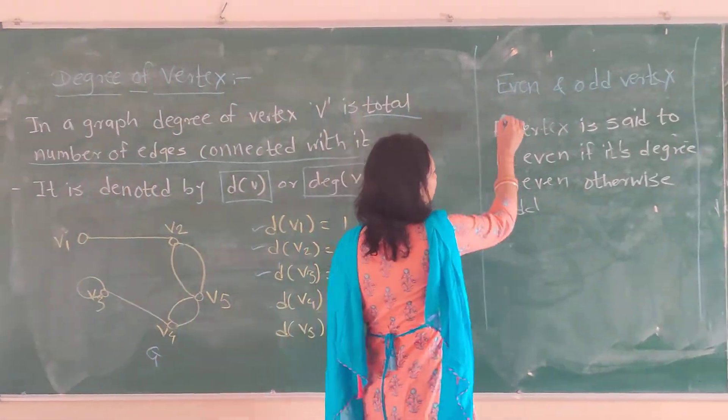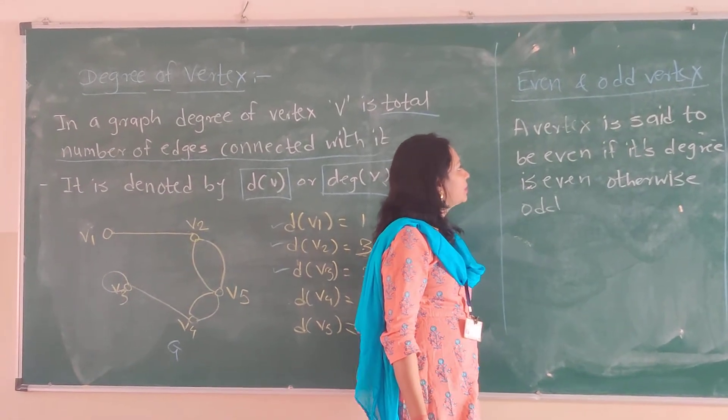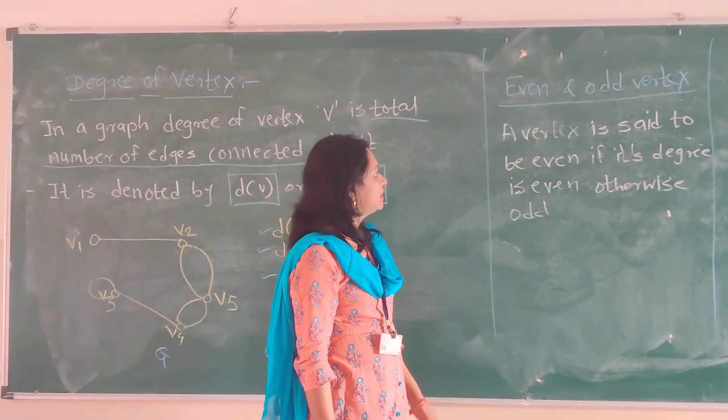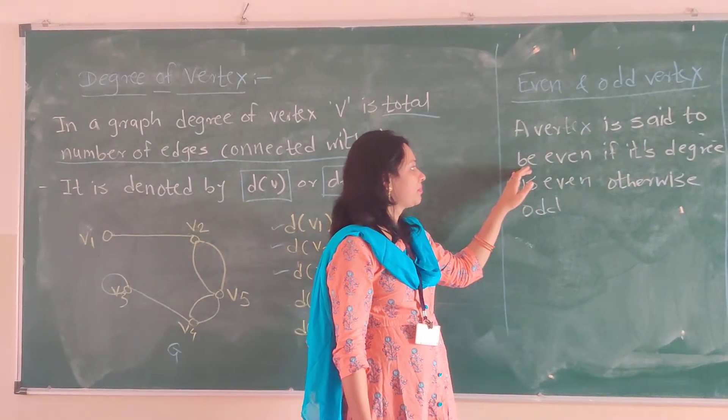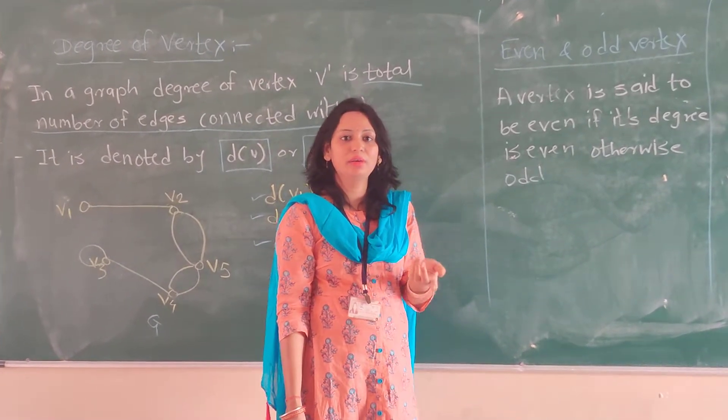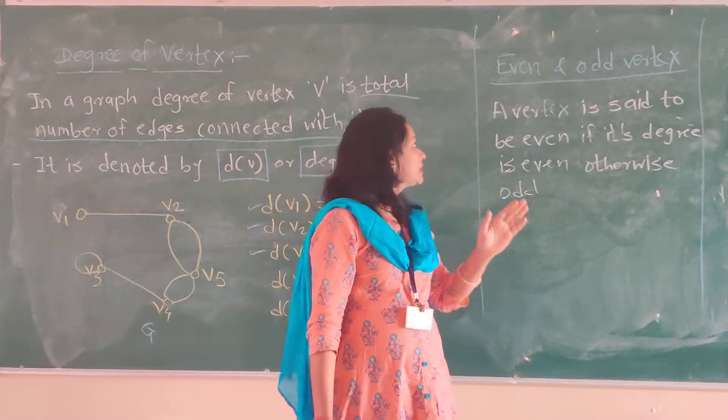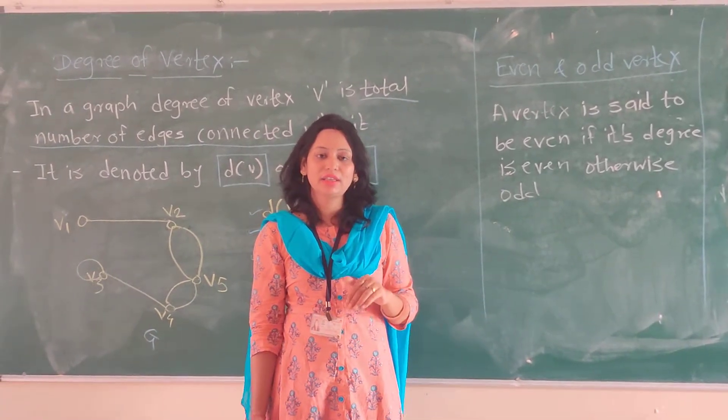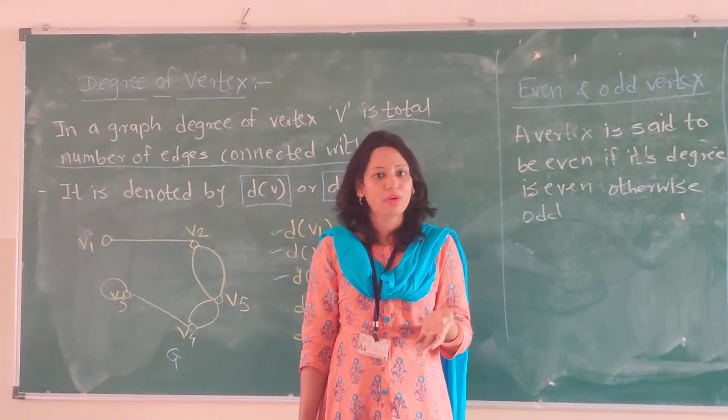The next concept is even and odd vertex. A vertex is said to be even if its degree is even, otherwise it is odd. Whenever the degree of a vertex is even, we say it is an even degree vertex. Whenever it is odd, we say it is an odd degree vertex or odd vertex.